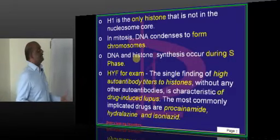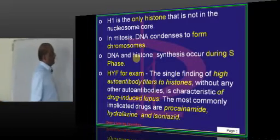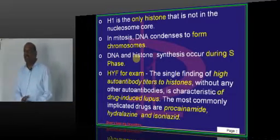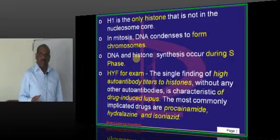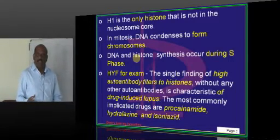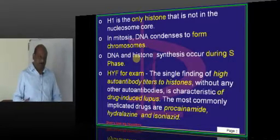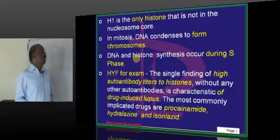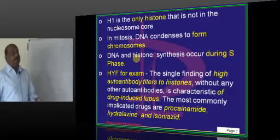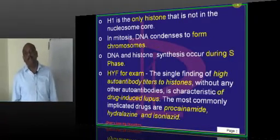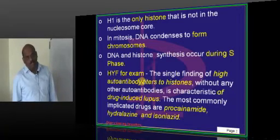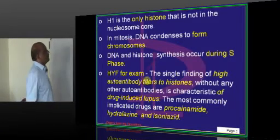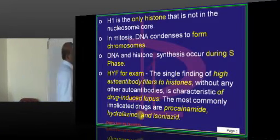At the time of mitosis, the DNA condenses to form chromosomes. The cell cycle has various phases: S phase, G phase, M phase, etc. Out of all these, DNA and histone synthesis occur during the S phase, which is otherwise called the synthetic phase.